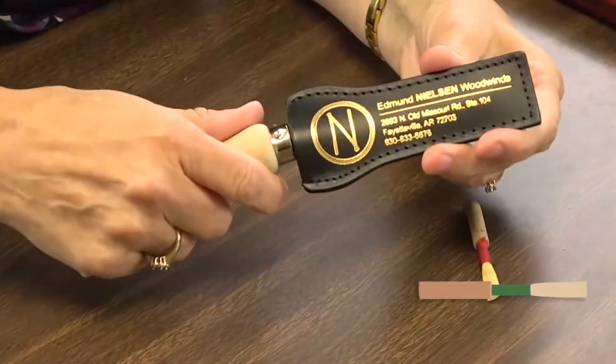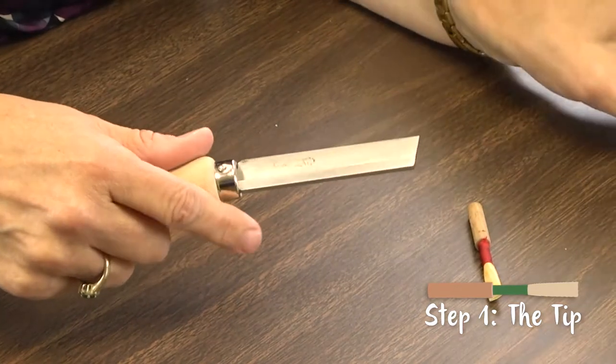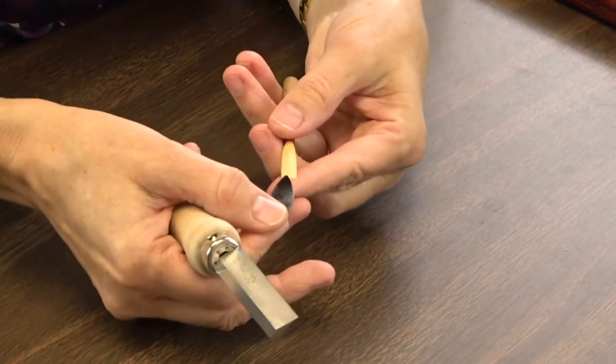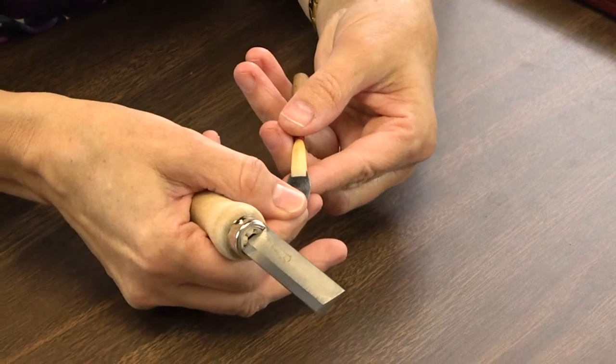Let's start by refining the tip of the reed. Insert the plaque before you start scraping, and make sure your knife is sharp. We want the tip to be shaded, getting thinner toward the sides and the end of the tip.